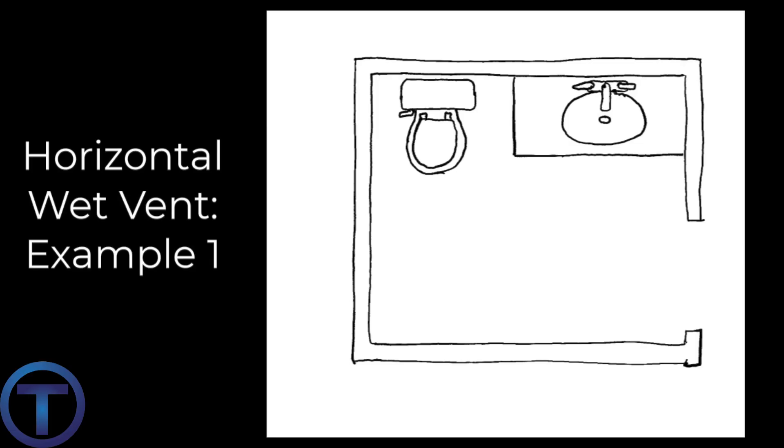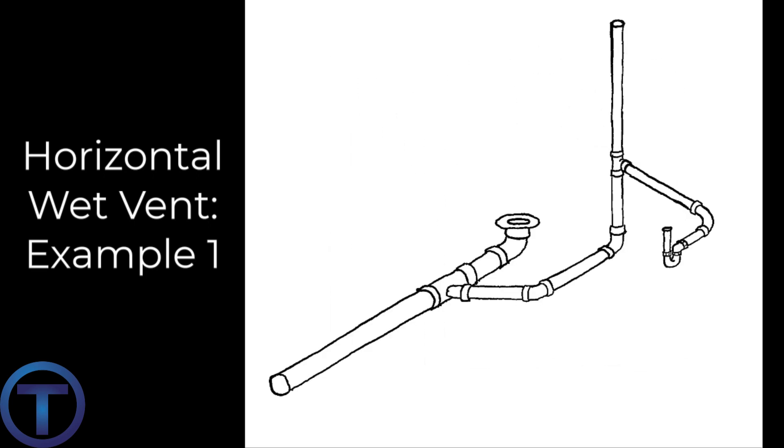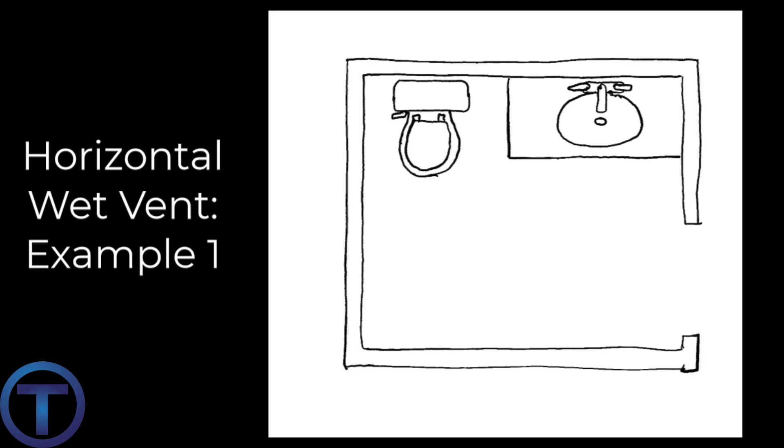Let's get into some examples of horizontal wet venting. Let's look at a half bathroom first: a simple toilet and a lav. In this case, we have a three-inch line going to the toilet. It branches off and the drain for the lavatory is being used both as a drain and a vent for the toilet.